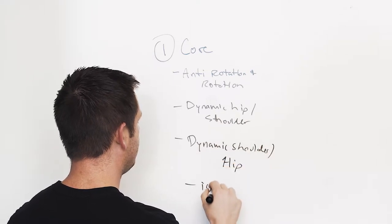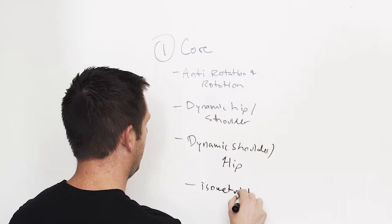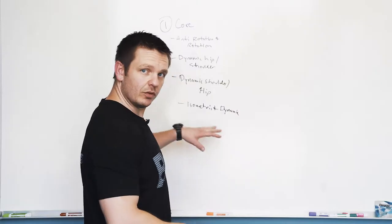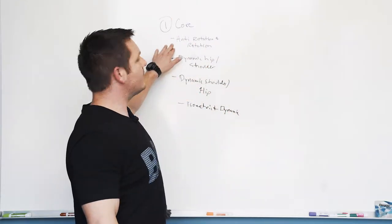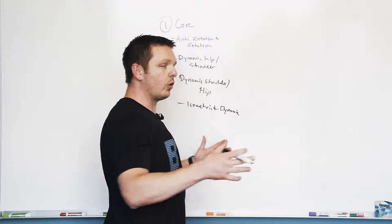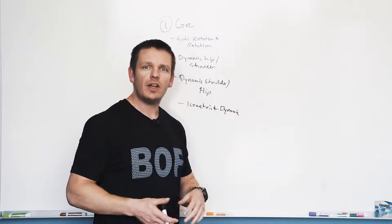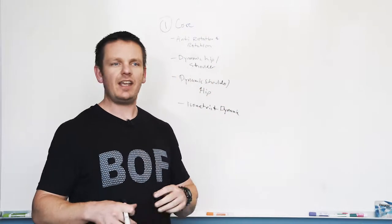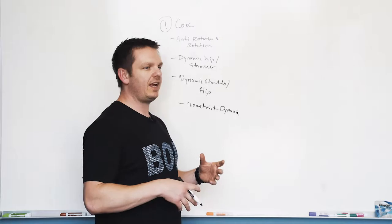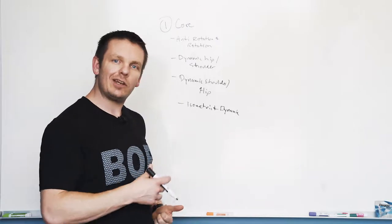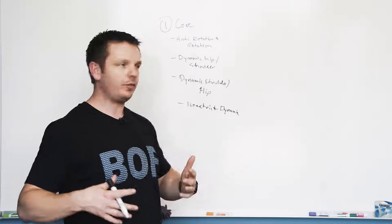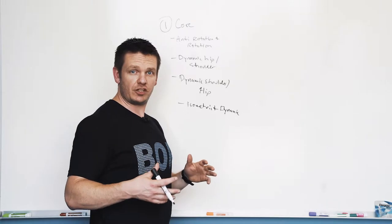Anti-rotation and rotation are exercises where we're either rotating or preventing rotation. Where this comes in handy is if you're in the garage bending over to pick up a box, or if you're carrying a kid or grandkid on your hip and you've got to prevent any sort of rotation or lateral movement. That's where the rotation and anti-rotation exercises come into play.